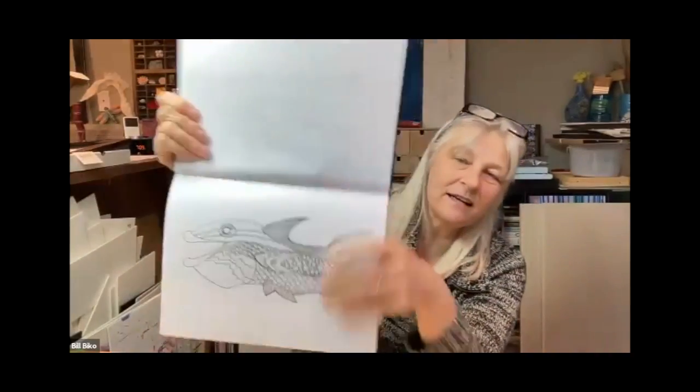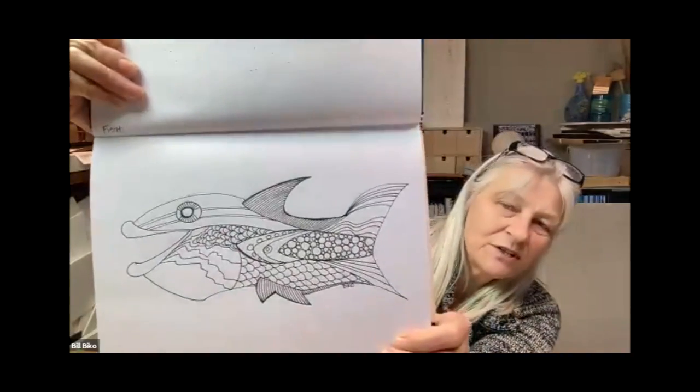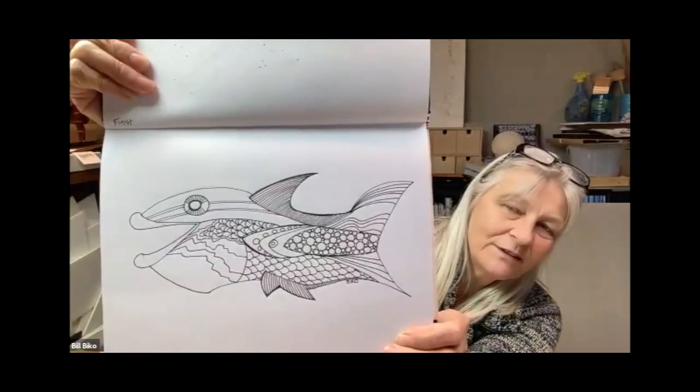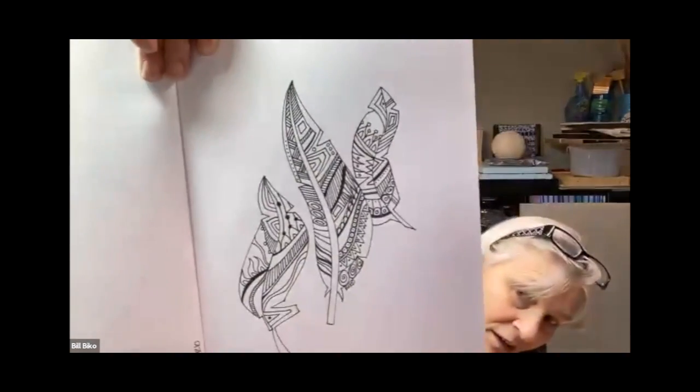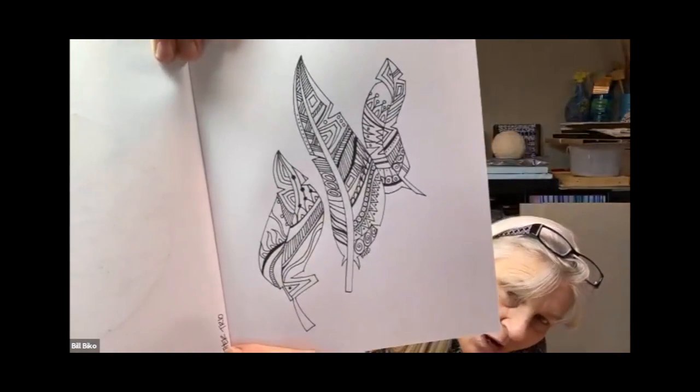I'm going to show you some of the things that I do. I do lots of different Zen Doodles, but this is one that I kind of like doing. It's like a big fish, very comical, but then you can doodle into it. But there's other things you can do if you're not good at drawing animals or something like that.